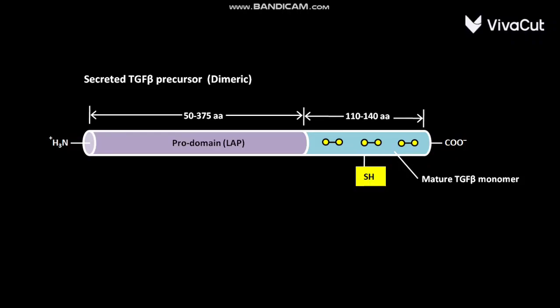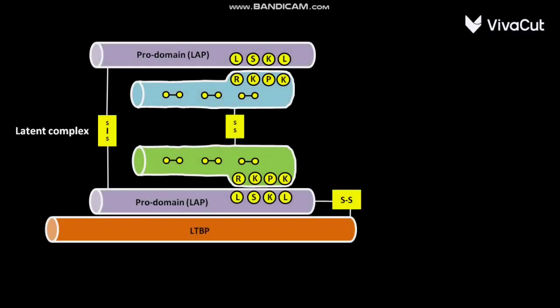the secreted TGF beta precursor undergoes proteolytic cleavage and also undergoes binding by LTBP or latent TGF beta binding protein to produce a latent complex. In the latent complex,